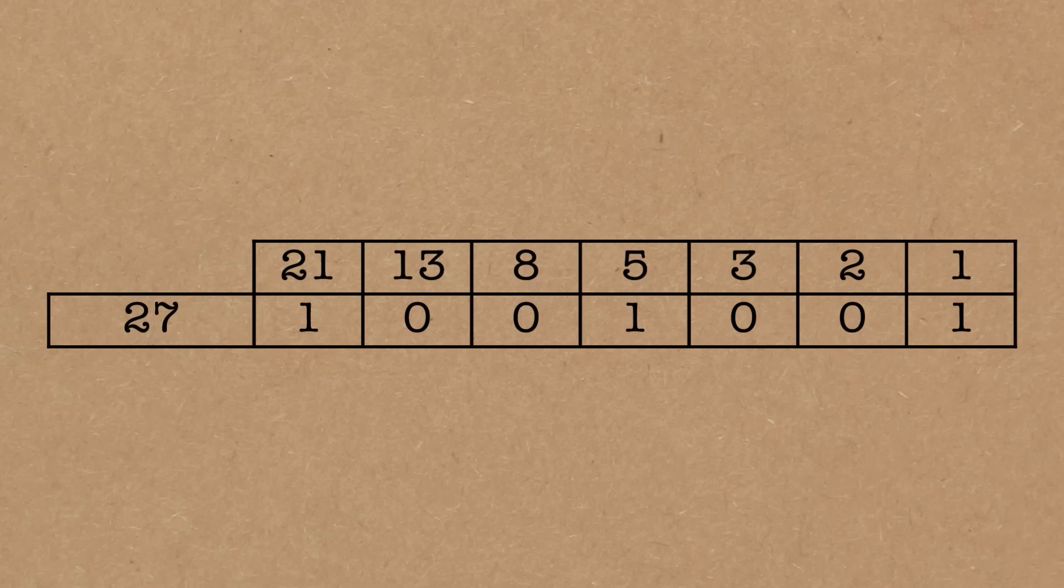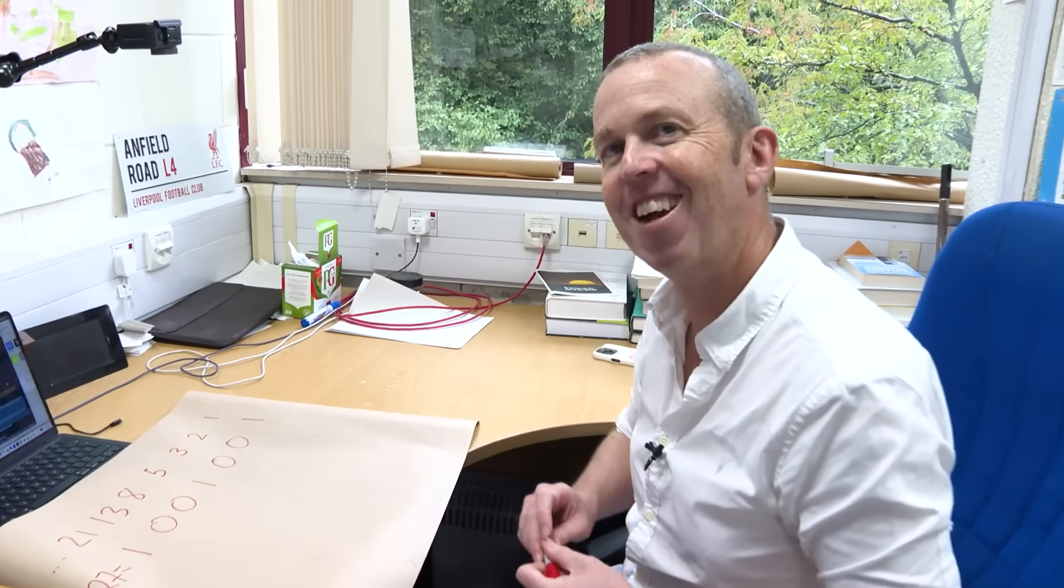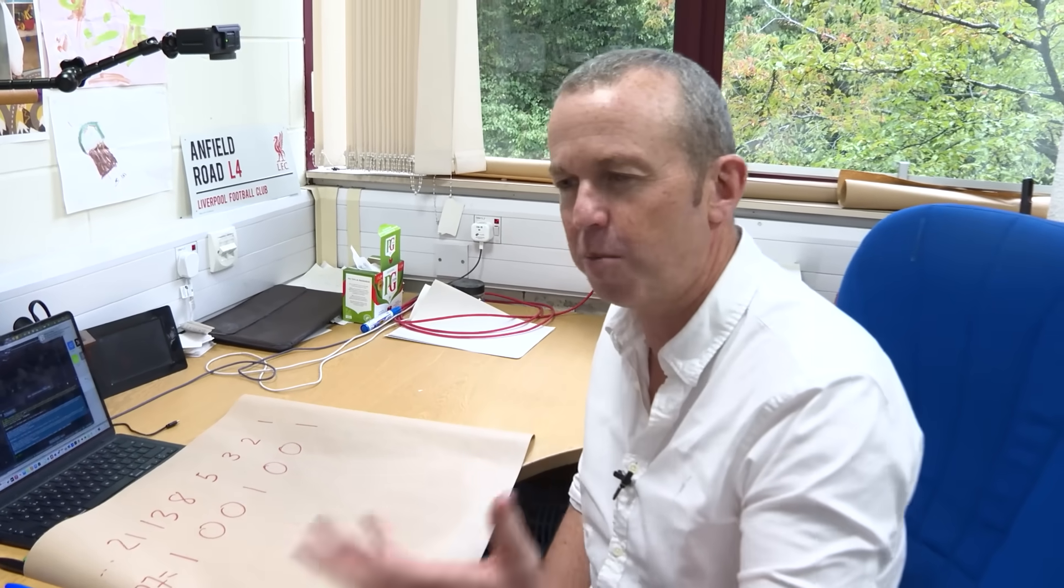Exactly. And actually, Brady, you've just touched upon something that's really important about the Zeckendorf decomposition and why it exists. To create it, you use something called a greedy algorithm. And this can explain why you never get two adjacent ones.